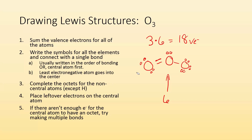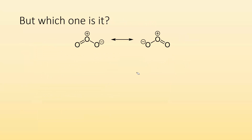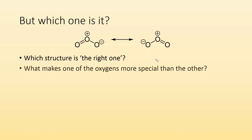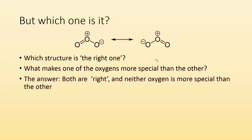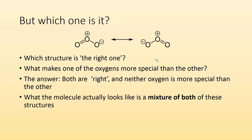Now something might jump out at you — why did I choose that oxygen? Why wasn't it the other oxygen? That's how you're going to know that there's resonance. Is it going to be the one where the double bond is on the left, or the one where it's on the right? Well, both structures are right. Neither oxygen is more special than the other. So what the molecule actually looks like is going to be a mixture of these two structures — a combo of the two. That's how you know you have resonance.